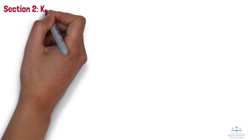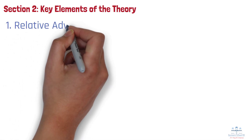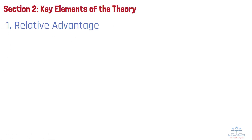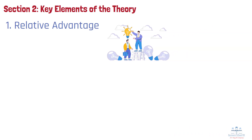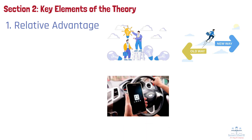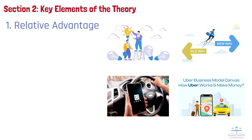Section 2: Key Elements of the Theory. There are five key factors that influence the rate and success of innovation diffusion. Number 1: Relative Advantage. This refers to how much better the innovation is compared to what it replaces. The greater the perceived improvement — whether in cost, convenience, speed, performance, or social prestige — the faster people will adopt it. For example, Uber offered a clear advantage over traditional taxis by providing on-demand rides through a mobile app, transparent pricing, and user reviews, which made it an easy sell to early adopters.